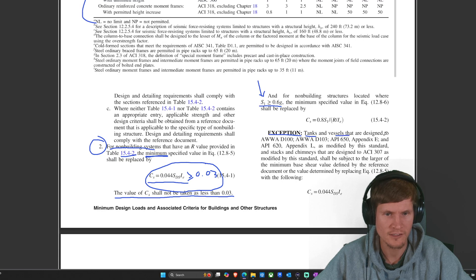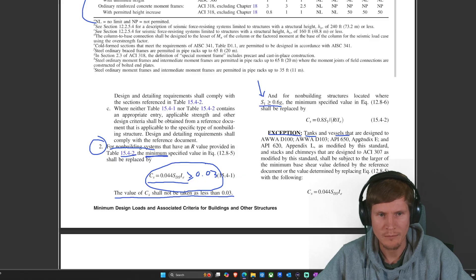And for non-building structures located where S sub one is greater than 0.6 G. All right, let's keep an eye on that because I believe S sub one for us is 0.75 G, which means this is true. The minimum specified value in equation 12.8.6 shall be replaced by this equation. Then there's an exception. What does this exception say? Tanks and vessels that are designed to appendix API, appendix, standard stacks and chimneys.